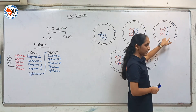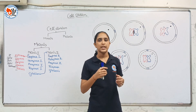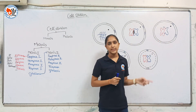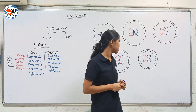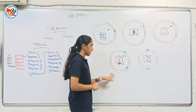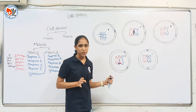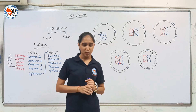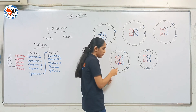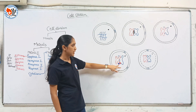In pachytene, there is crossing over between homologous chromosomes. Because of this, genetic material is exchanged between them, and there will be recombination between non-sister chromatids of homologous chromosomes. After pachytene, there will be diplotene. In diplotene, there will be repulsion between homologous chromosomes and they start to separate from each other. But they don't separate completely, and they form an X-shaped structure called chiasmata, where genetic exchange is visible.